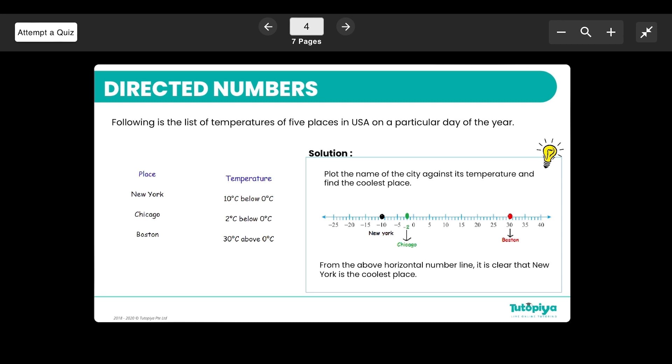Plot the name of the city against its temperature and find the coolest place. Often for a question like this, take a number line and plot exactly what they've said. You can see New York is 10 degrees below 0, so that's negative 10. Chicago is 2 degrees below 0, which is negative 2. Boston is 30 degrees above 0, so Boston is up there.